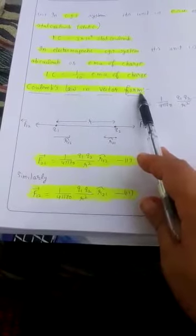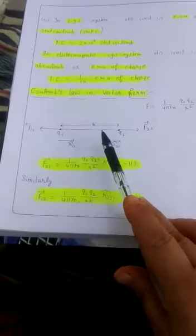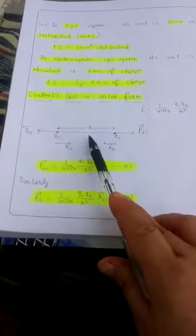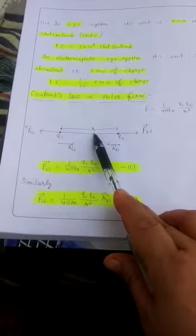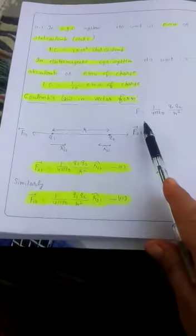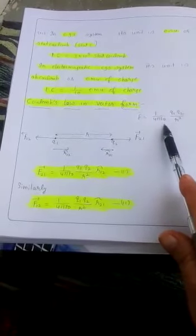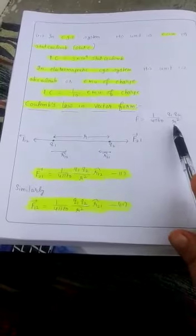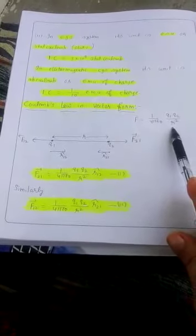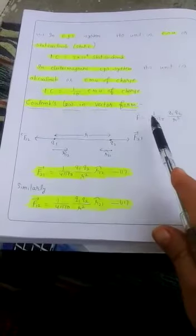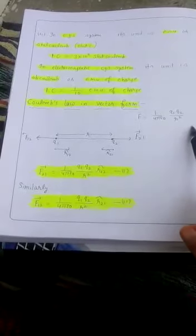According to Coulomb's law, the force of interaction between two point charges separated by distance r in vacuum can be written as 1 upon 4 pi epsilon 0 q1 q2 upon r square. Today we will discuss how to write this Coulomb's law in vector form.